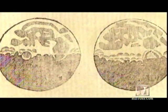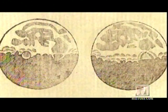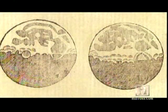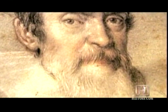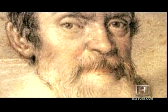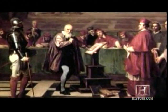Galileo made detailed drawings of the small planet's surface, and established once and for all that the moon is a solid world, not a god or a fireball. But the ground-breaking astronomer never publicly speculated on the moon's origin, primarily because his interest soon moved to other planets.